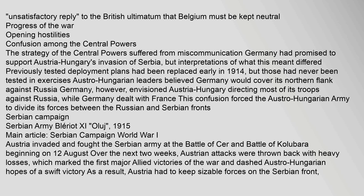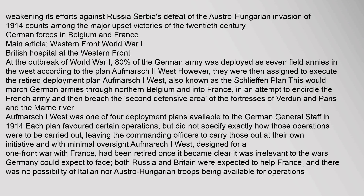Austria invaded and fought the Serbian army at the Battle of Cer and the Battle of Kolubara, beginning on 12 August. Over the next two weeks, Austrian attacks were thrown back with heavy losses, which marked the first major Allied victories of the war and dashed Austro-Hungarian hopes of a swift victory. As a result, Austria had to keep sizable forces on the Serbian front, weakening its efforts against Russia. Serbia's defeat of the Austro-Hungarian invasion of 1914 counts among the major upset victories of the 20th century.